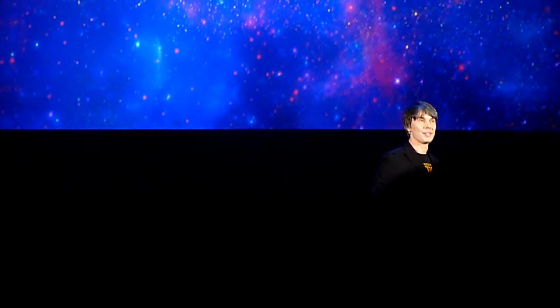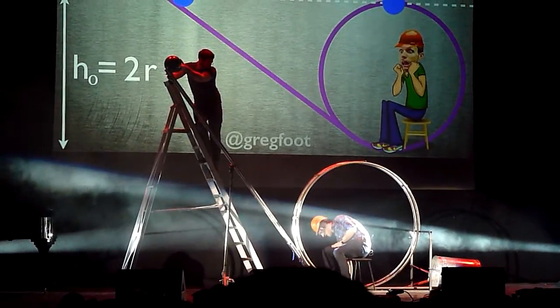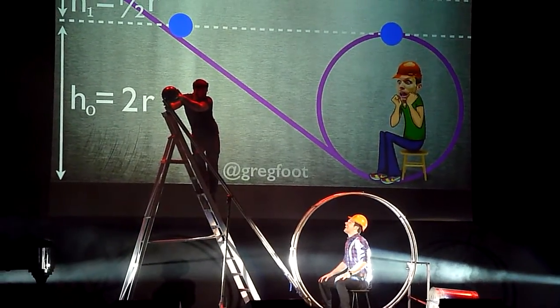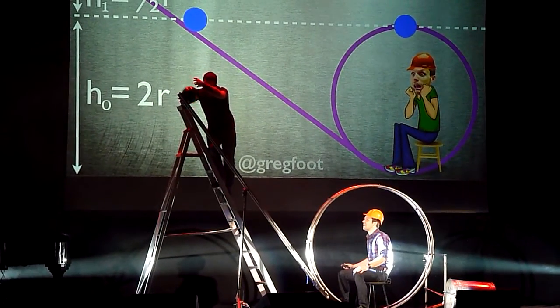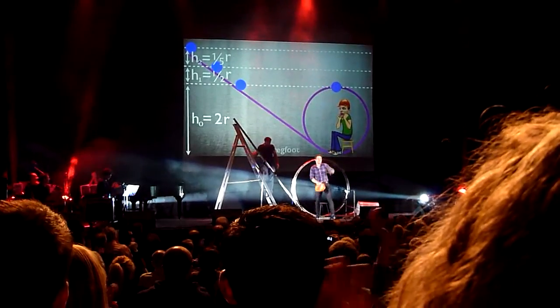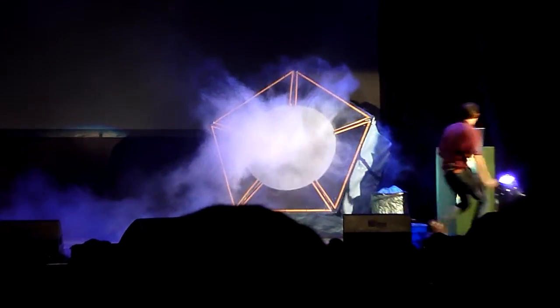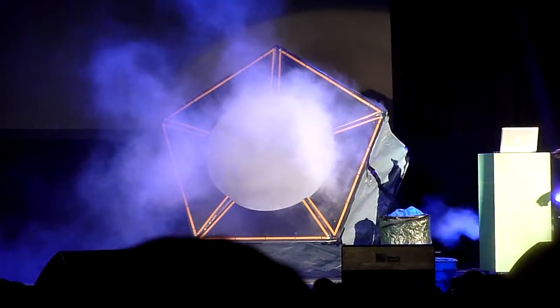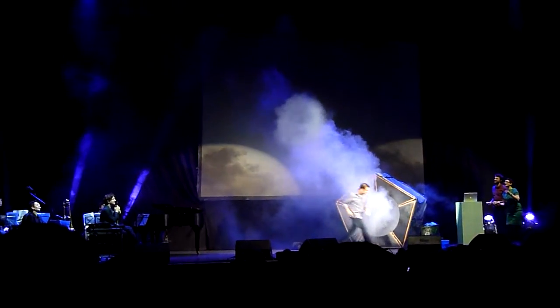A hundred years ago, Einstein published those equations, and almost immediately... [A demonstration is attempted involving a spinning ball. There is a malfunction — 'The safety helping is on' — followed by a countdown and then apparent chaos as the ball misfires.] Everyone relax. Everyone continue relaxing.